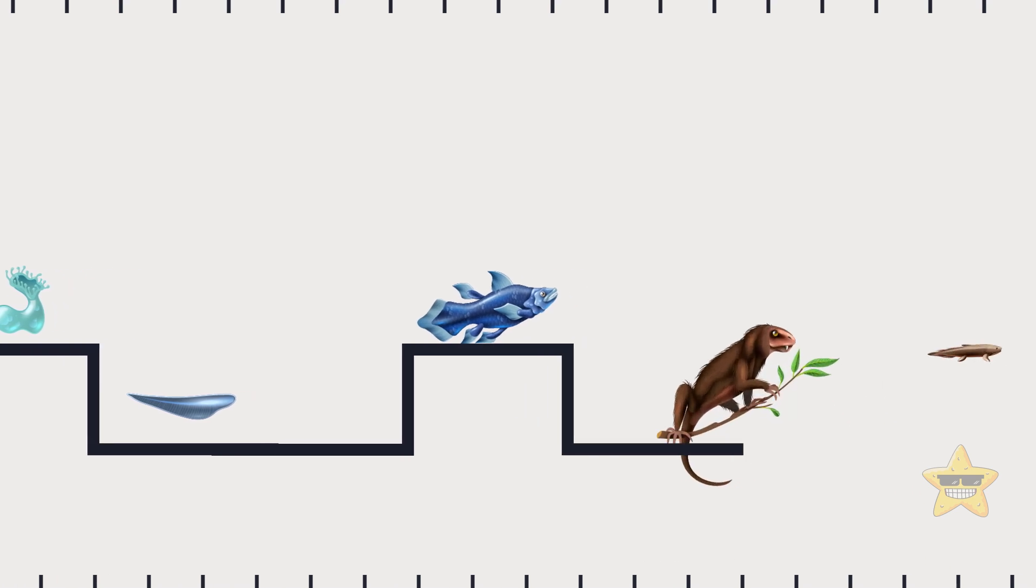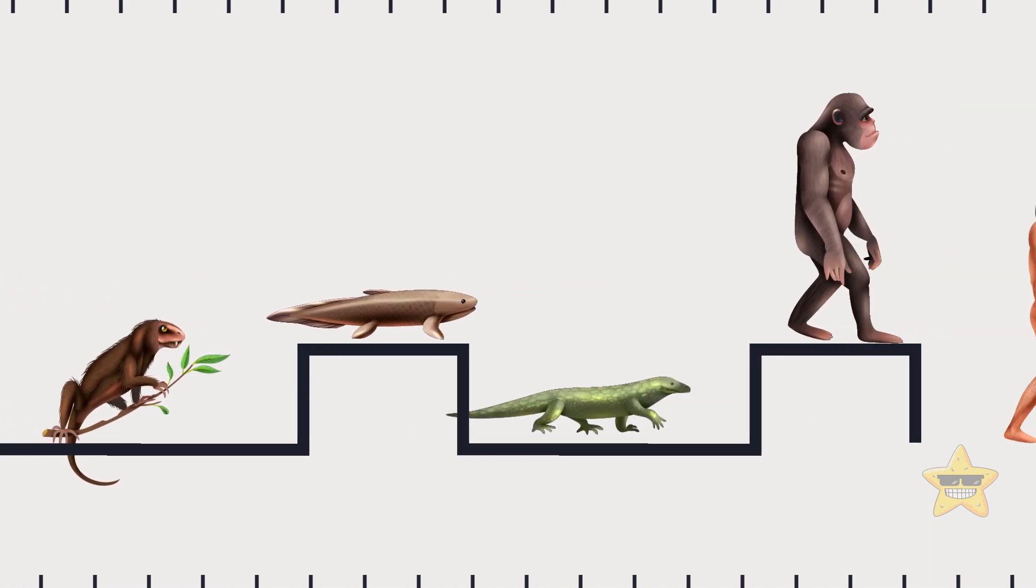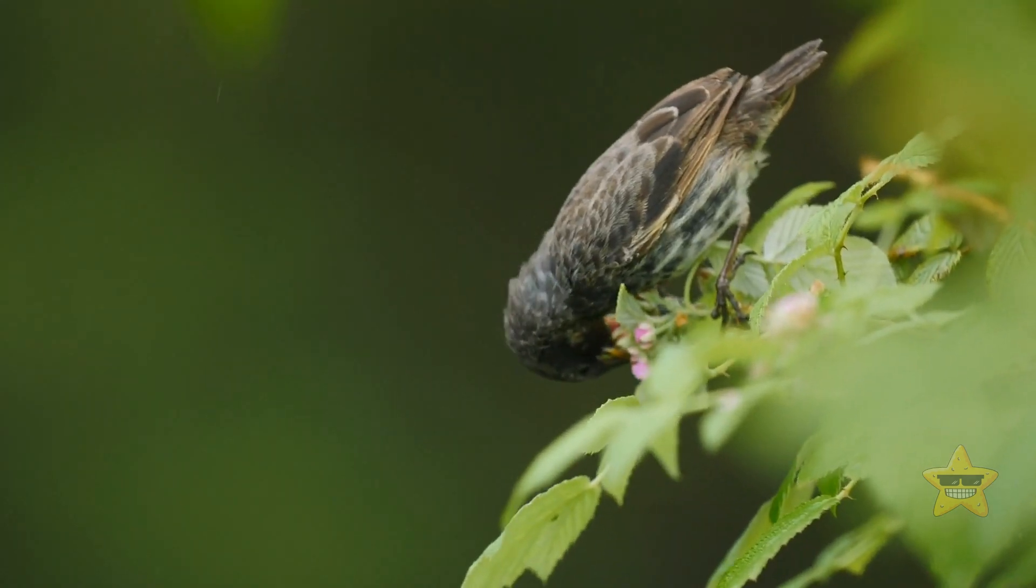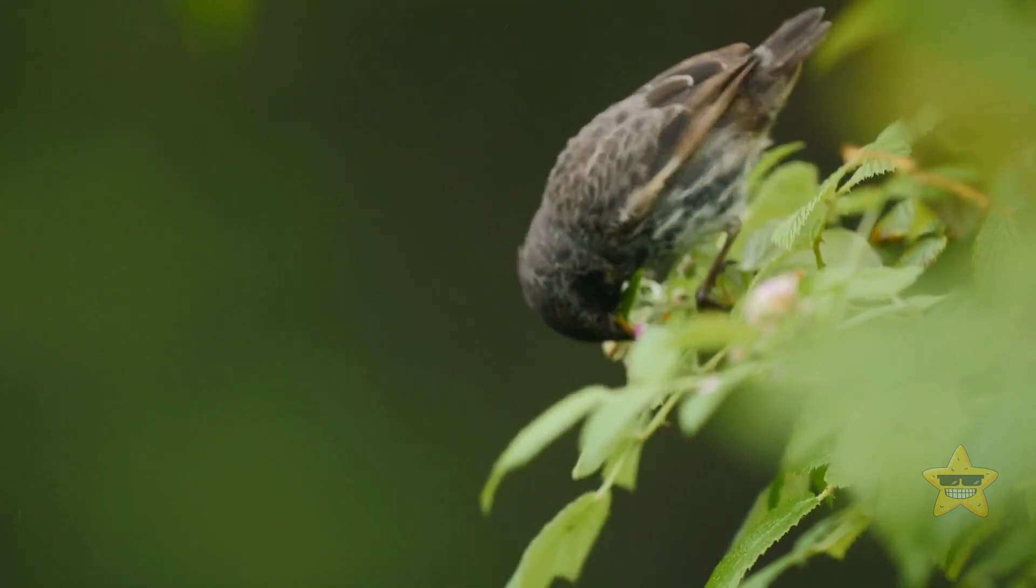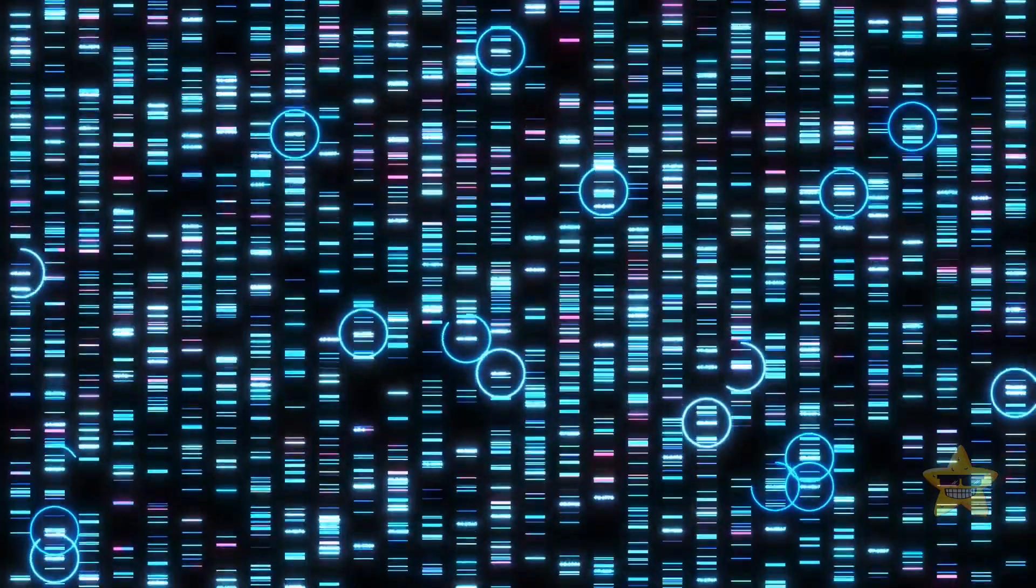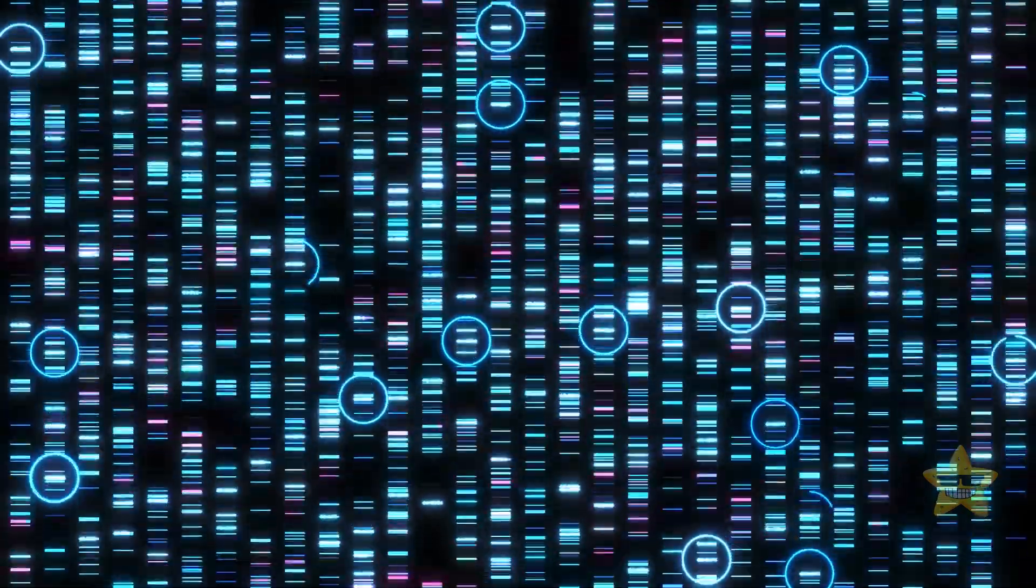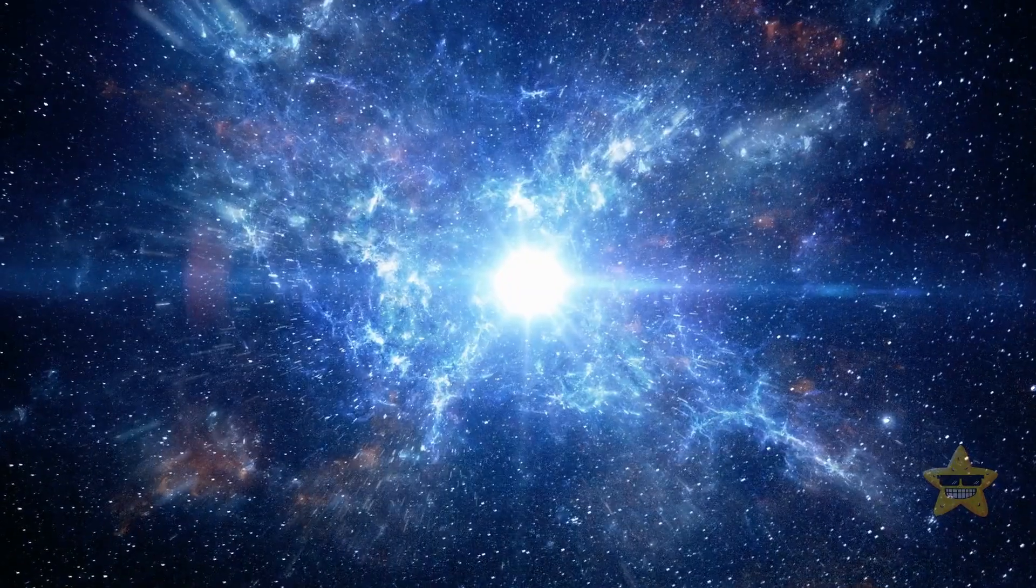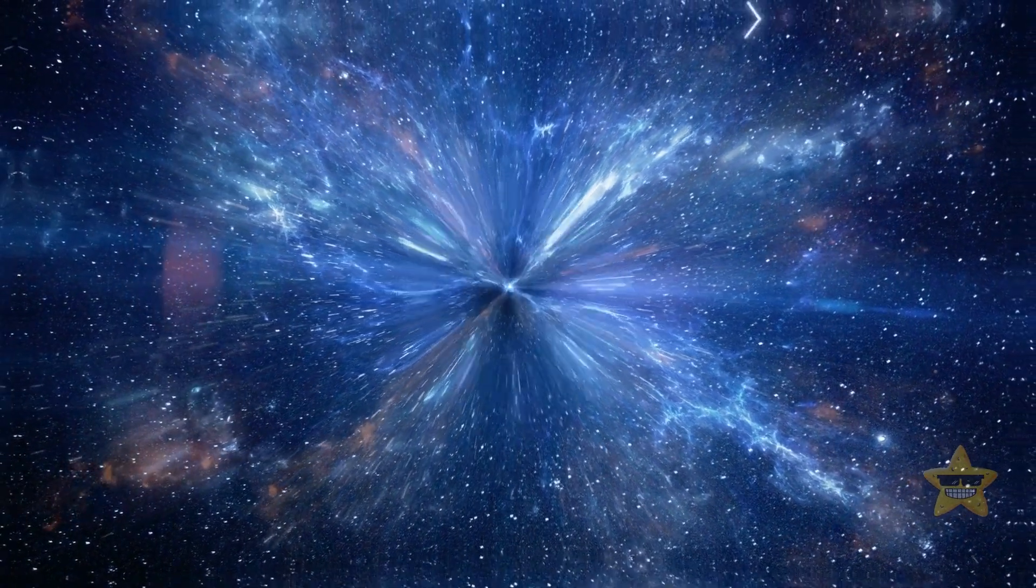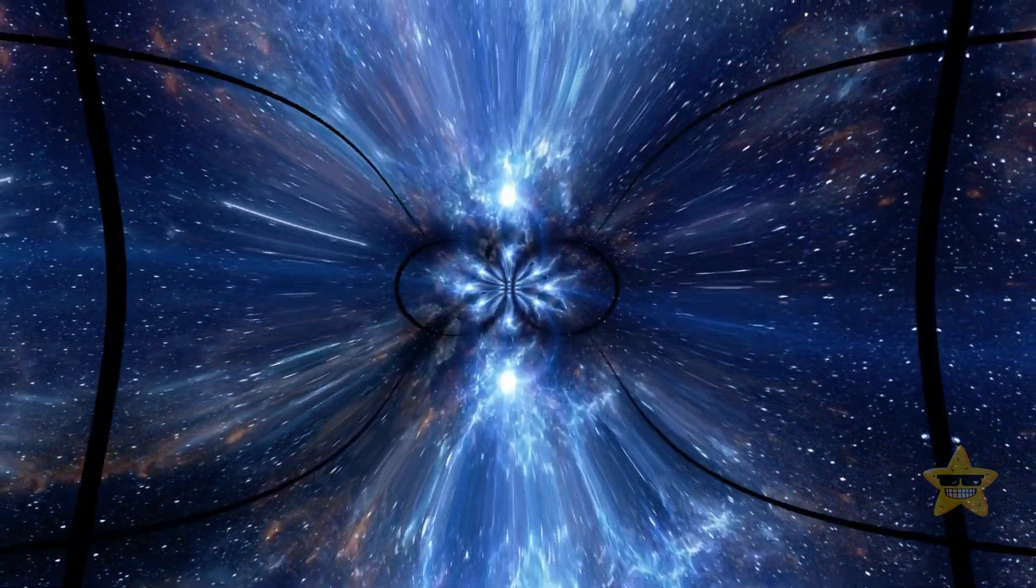Nature sees that some traits are helpful for survival, so they stick around, while others get left behind. In other words, a way to define life is by saying that it's subject to this process, called Darwinian evolution. But how did it happen that things capable of evolution appeared? And when did the very first life emerge in our universe? To find out the answer, let's go to the very beginning of everything.